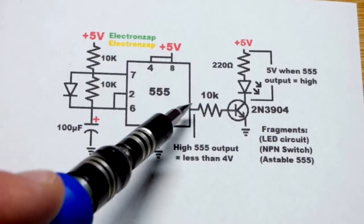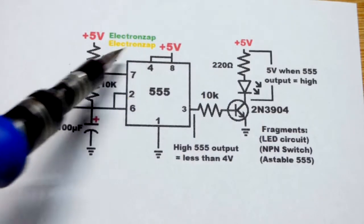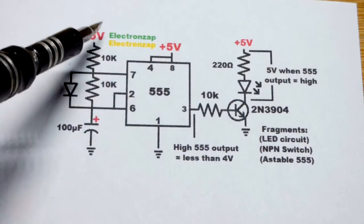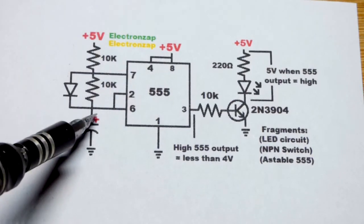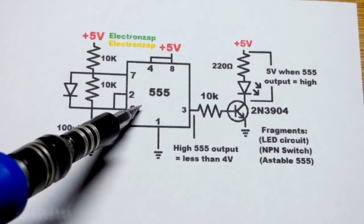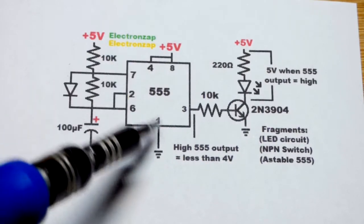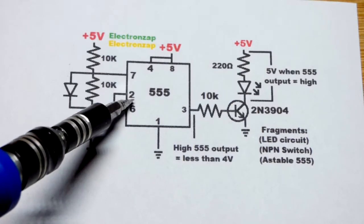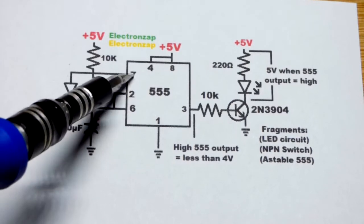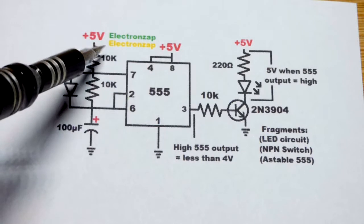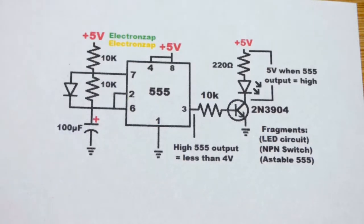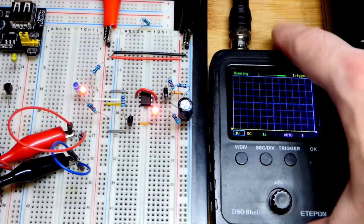To set the high and low, we have the 555 timer wired in astable mode. The capacitor will charge up to 2/3 supply voltage. Pin 6 will tell pin 7 to discharge the capacitor. Then the capacitor will discharge until it gets to 1/3 supply voltage, and then pin 2 will say stop discharging the capacitor. It will start charging again. It just keeps alternating. That's what astable does.